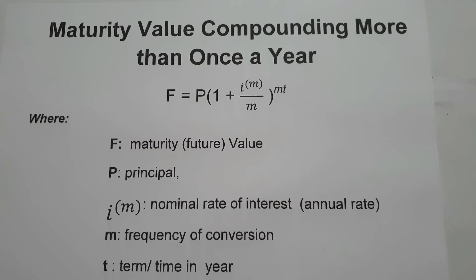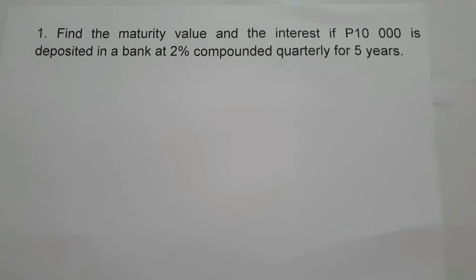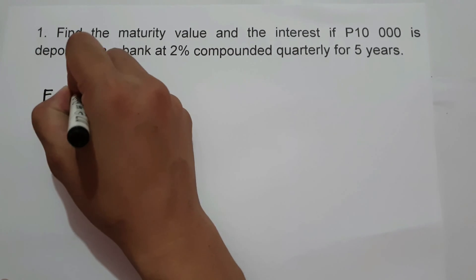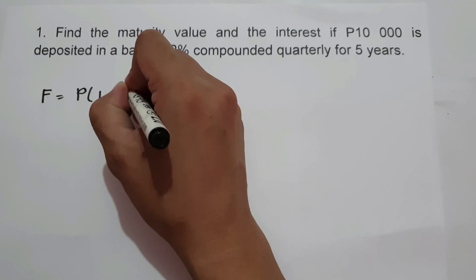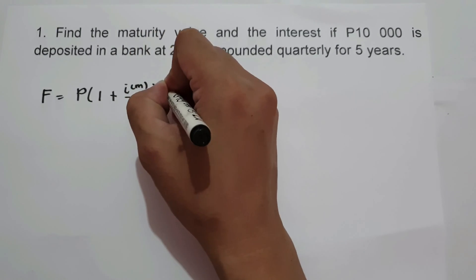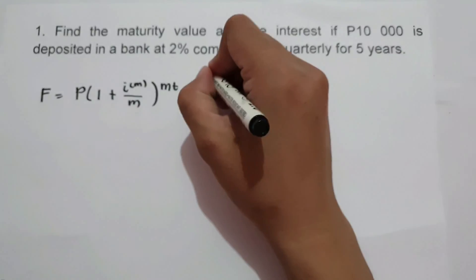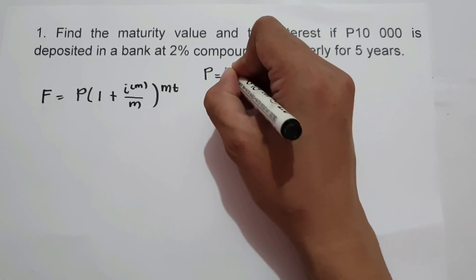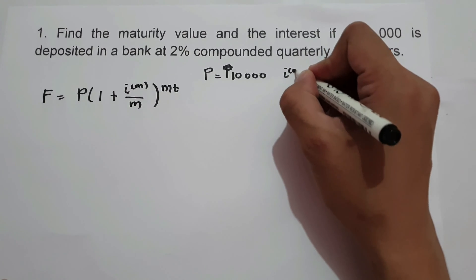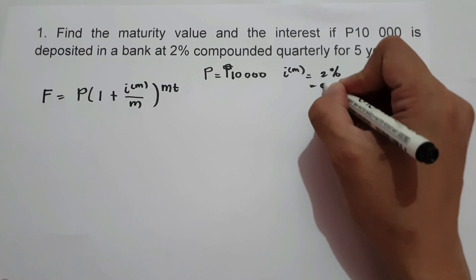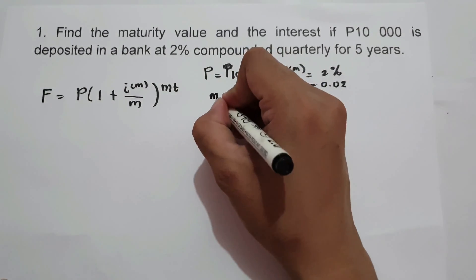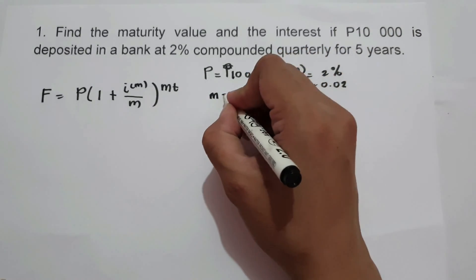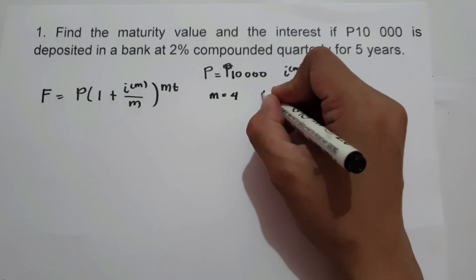Let's start with example one: find the maturity value and the interest if 10,000 is deposited in a bank at 2% compounded quarterly for 5 years. The given values are: P equals 10,000, nominal rate is 2% or 0.02, M equals 4 since there are 4 quarters in a year, and time is 5 years.